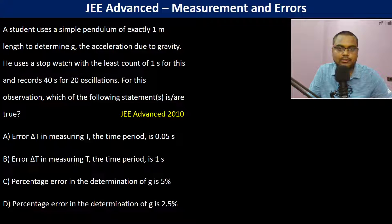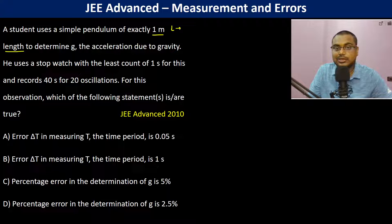A student uses a simple pendulum of exactly 1 meter length. Length is constant, so ΔL is going to be 0.